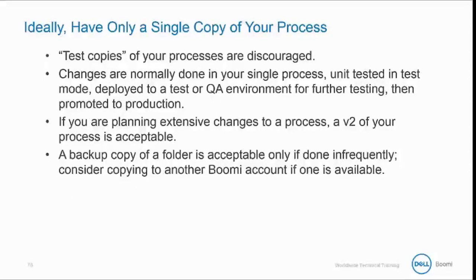Test copies of a process are discouraged. Instead, have one copy of your process. Changes are normally done in your single process, unit tested in test mode, deployed to a test or QA environment for further testing, and then promoted to production. Now, if you are planning extensive changes to a process, then a version 2 of your process may be acceptable. A backup copy of a folder is acceptable if done infrequently. Instead, consider copying to another account if you have one available.